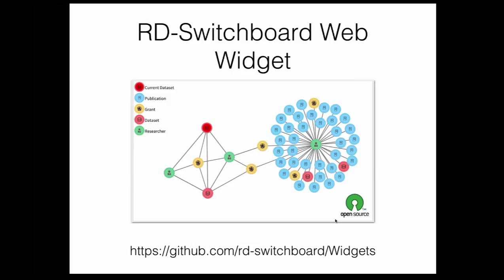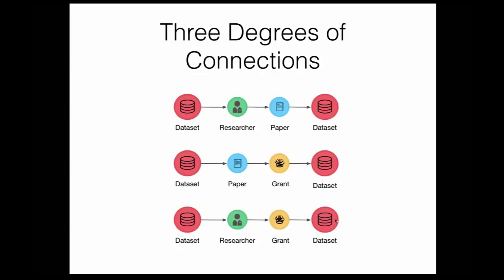The source code is available on GitHub under the MIT open source license. This next slide is about how things are connected and what we mean by degree of separation. This is an example of three degrees of separation: a dataset linked to a researcher, the researcher is author of a paper, and that paper is connected to another dataset. Or a dataset linked to a paper, the paper has acknowledgement to a grant, and the grant is linked to another dataset. These are the sorts of connectivity we get from our international partners — a lot of information comes from Europe and the US about this kind of connectivity, all aggregated into the body of the switchboard.